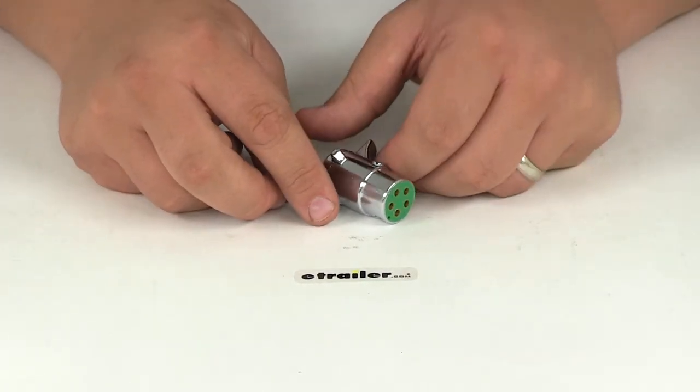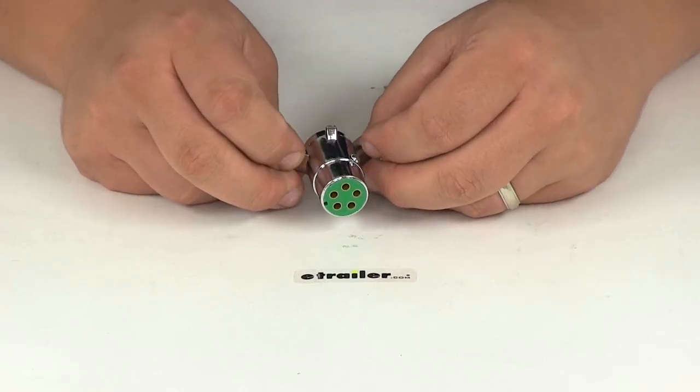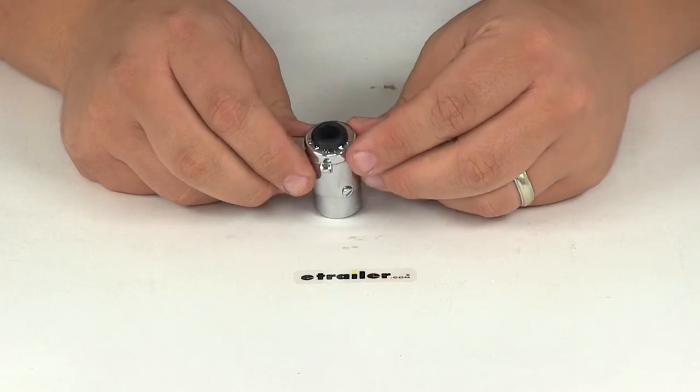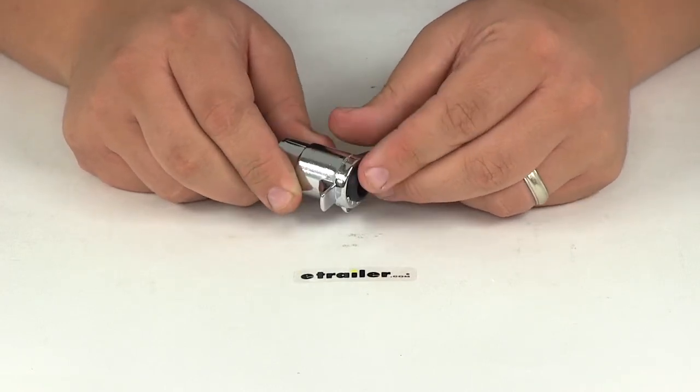When it comes to the wiring configuration, white is for ground, green is for right turn and brake, yellow is for left turn and brake lights, red is your auxiliary circuit, and brown is for tail lights.